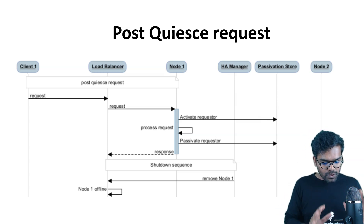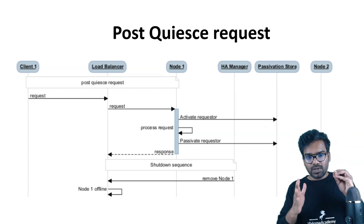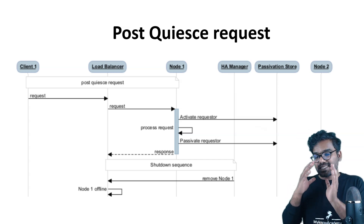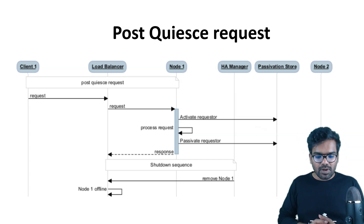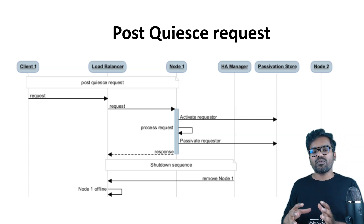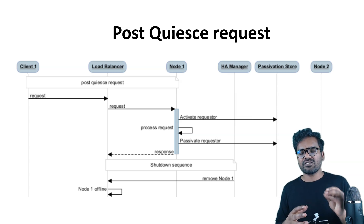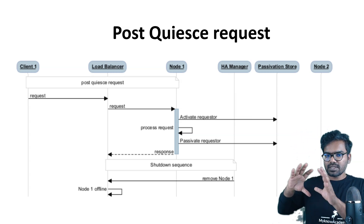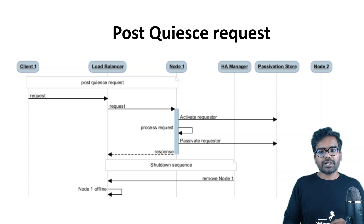Even though quiescing is completed, if there are requests coming in, the node is still going to serve until the shutdown sequence is executed. Once shutdown is completed, the load balancer updates and marks node 1 as offline. When a server is marked offline in the load balancer, traffic will no longer go to that server. This covers the post-quiesce request stage before the load balancer is updated.